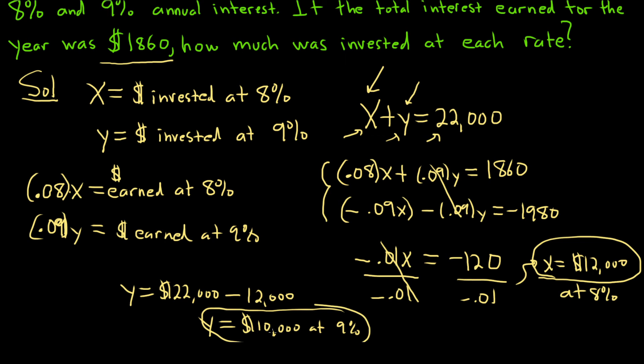So $10,000 at 9%. You can just do it in your head. The numbers are so nice. If you invest $12,000 at 8%, you start with $22,000, so you're left with $10,000. So the answer for 9% is $10,000.